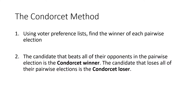In the previous lecture we learned about the Condorcet Method, which tells us to look at voter preference lists and find the winner of each pairwise election. We match each of the candidates up one by one against each other, and see who wins. The candidate that beats all of their opponents in the pairwise elections we call the Condorcet Winner, and the candidate that loses all of their pairwise elections we call the Condorcet Loser.